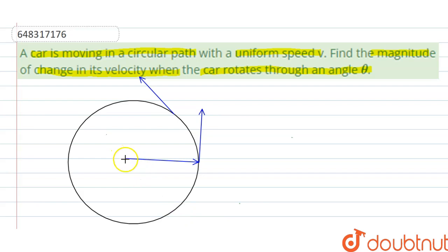So this position is rotating about theta angle from here to here. This is the speed v and speed v, but velocity is due to change in direction its velocity is always changing.